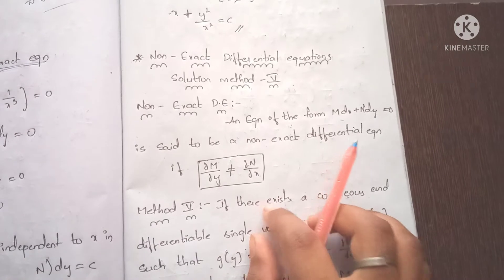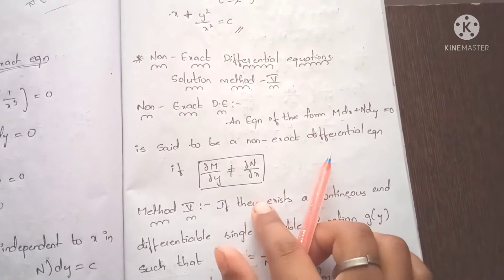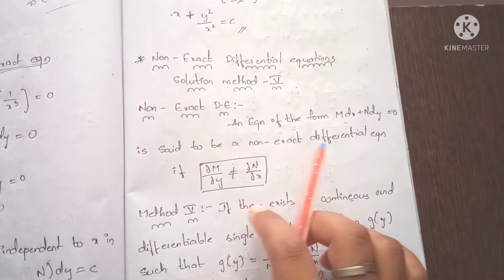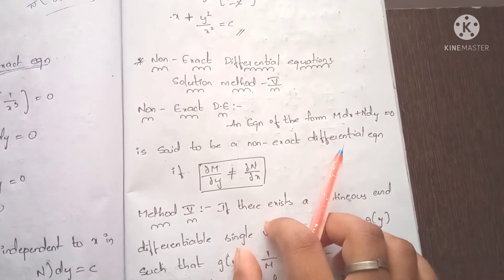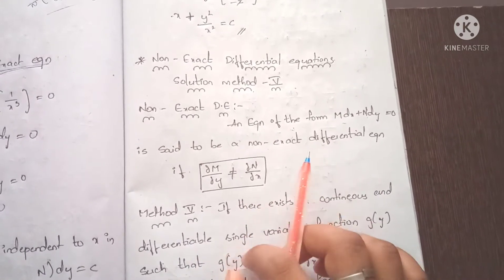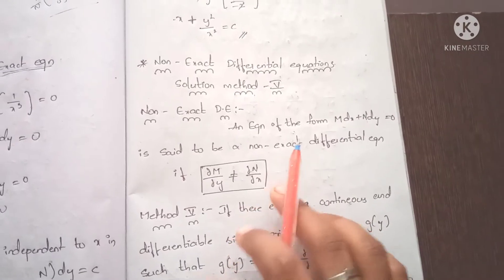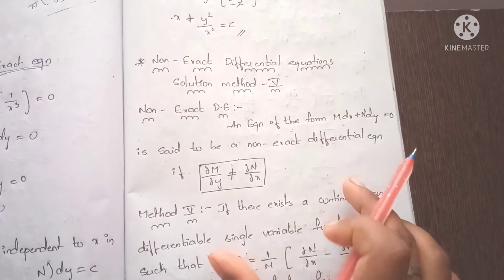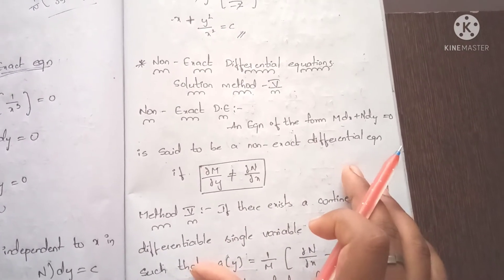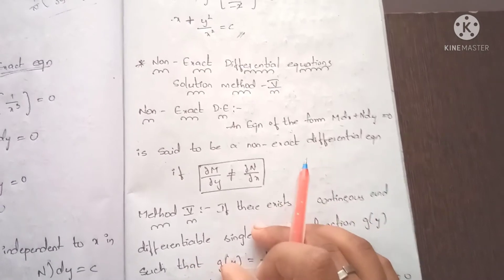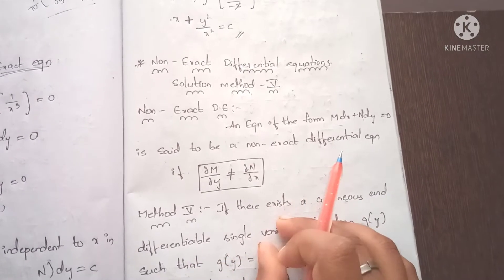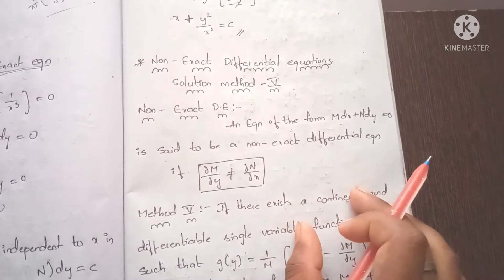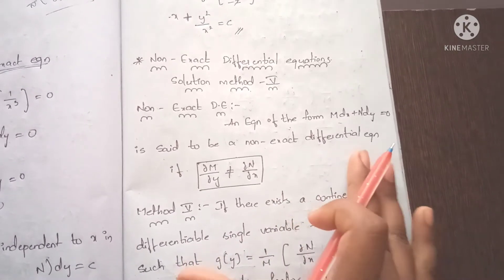The first method is the formulas method. The second method is the homogeneous method where the power terms are the same. The third method involves a separate formula where the equation is of the form y into some term into dx plus x into some term into dy equals to 0.